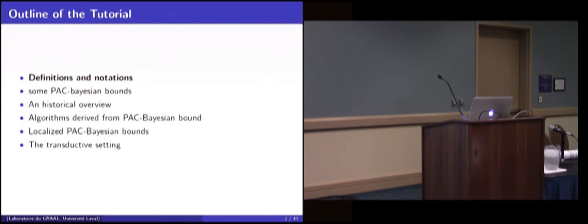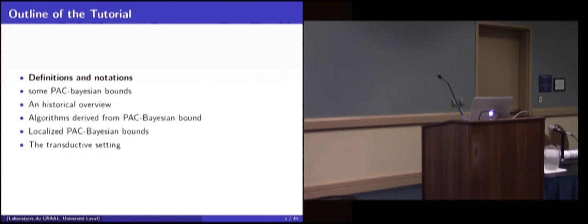Here's my outline. I will start with a definition, give you some usual PAC-based bounds, an historical review, an algorithm derived from PAC-based bounds that are interesting, what we call localized priors, and if I have time, I will finish with the transductive setting.